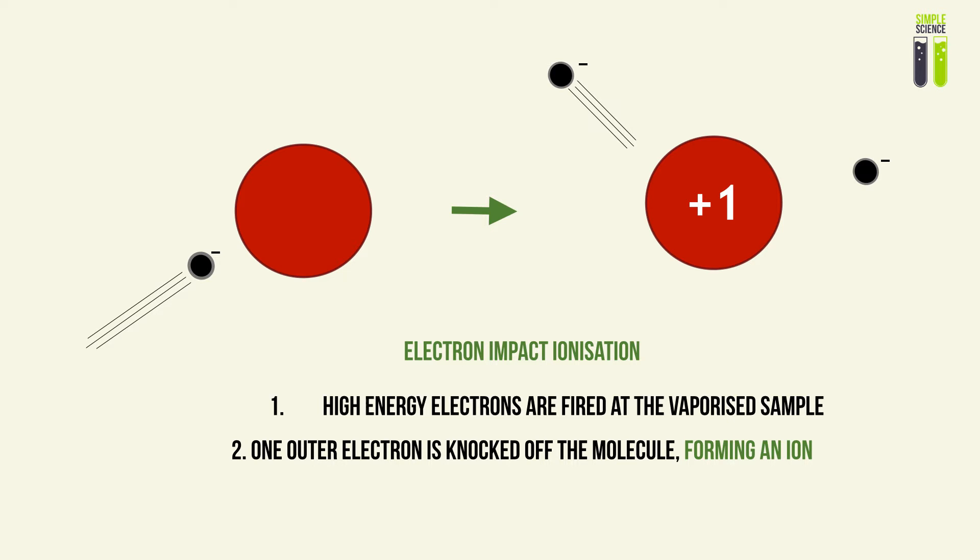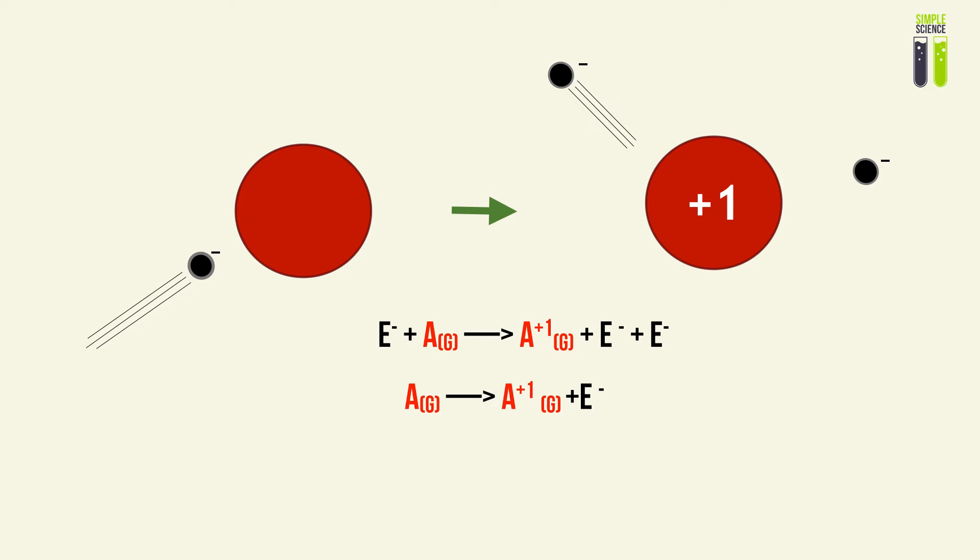This is basically how we will understand ionization, and the energy will be related to this process. What is basically happening is we are bombarding our species with an electron, and this will cause a positive ion to be formed and an electron to be knocked out. If we were to form the first equation, it will be: electron plus atom or molecule forms the ion plus two electrons.